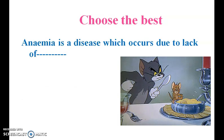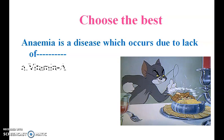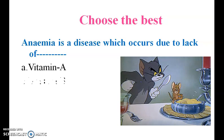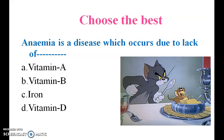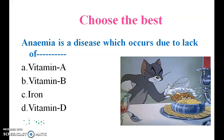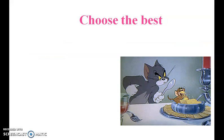Anemia is a disease which occurs due to lack of vitamin A, vitamin B, iron, or vitamin D. The answer is iron.